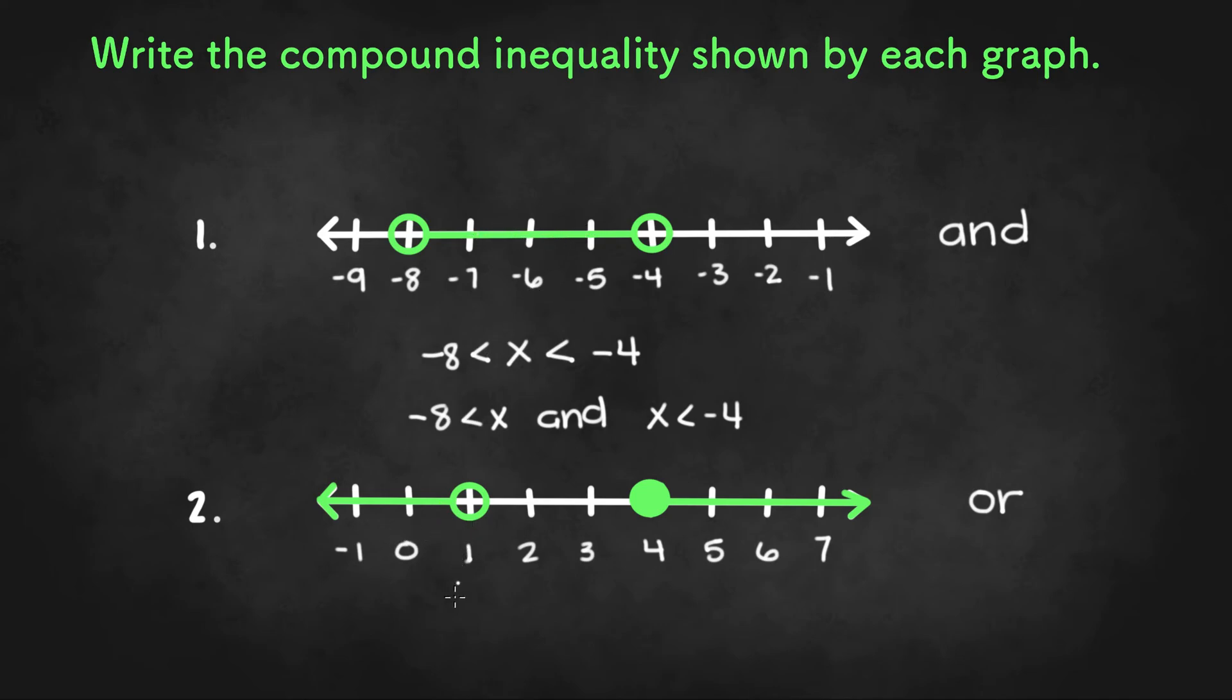So we have an open dot at 1 and an arrow pointing to the left. So values are getting smaller or x is smaller than 1 or x is less than 1, which is our first inequality. Or we have 4 and an arrow pointing to the right or greater than. So we have x is greater than 4.